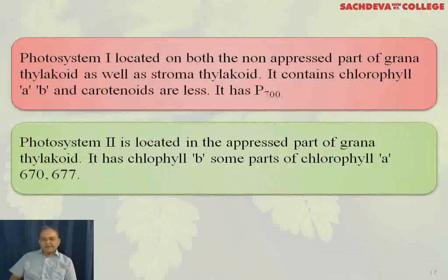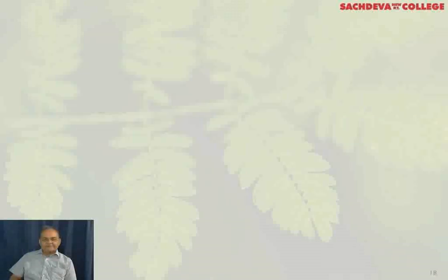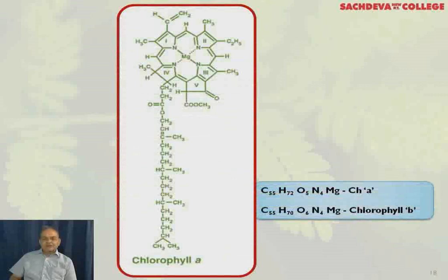Photosystem II is located in the appressed part of the grana thylakoids. It has chlorophyll B and some parts of chlorophyll A — specifically A670 and A677. This is the structure of chlorophyll A: a tetrapyrrole ring with a magnesium atom in the center and a phytol tail. Chlorophyll A is C55H72O5·4Mg and chlorophyll B is C55H70O6·4Mg. The only difference between them is that at the third carbon, chlorophyll A has a methyl group which is replaced by an aldehyde group in chlorophyll B.